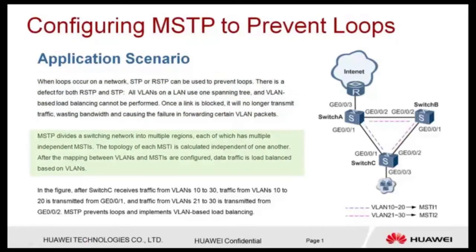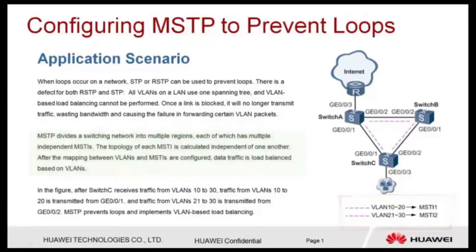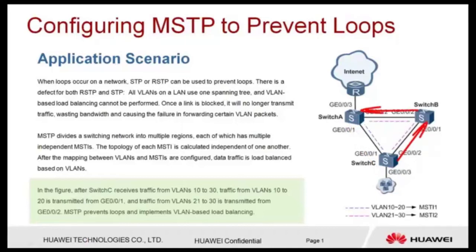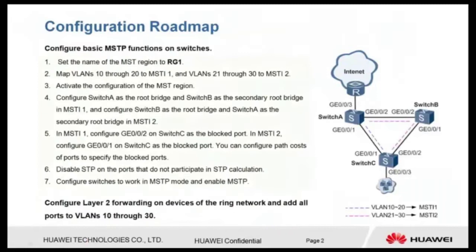MSTP divides a switching network into multiple regions, each of which has multiple independent MSTIs. After the mapping between VLANs and MSTIs is configured, data traffic is load balanced based on VLANs. In the figure, after switch C receives traffic from VLANs 10 to 30, traffic from VLANs 10 to 20 is transmitted from GE001, and traffic from VLANs 21 to 30 is transmitted from GE002. MSTP prevents loops and implements VLAN-based load balancing.